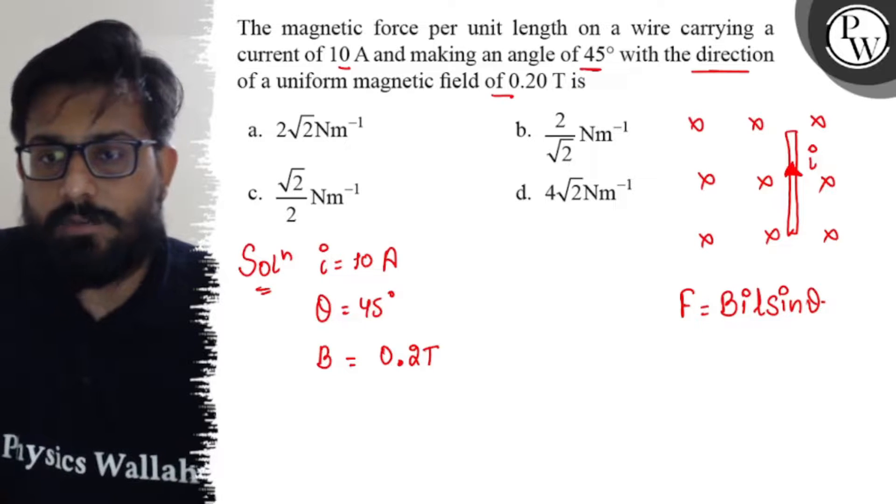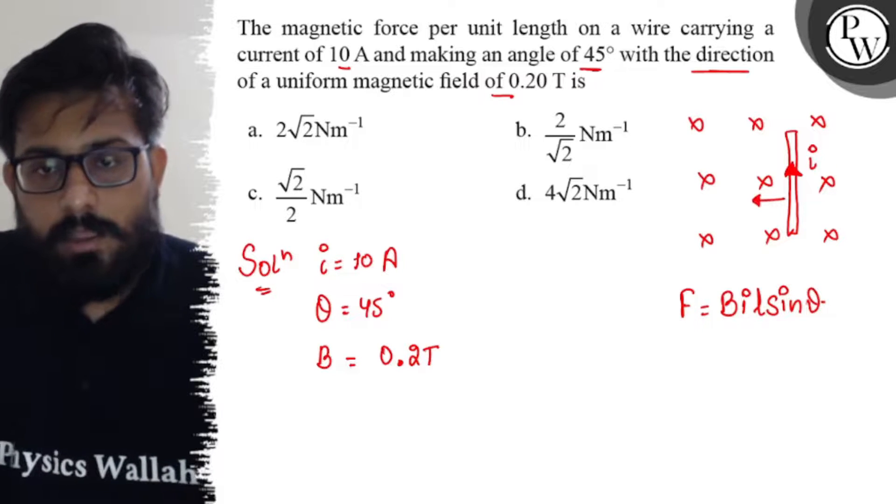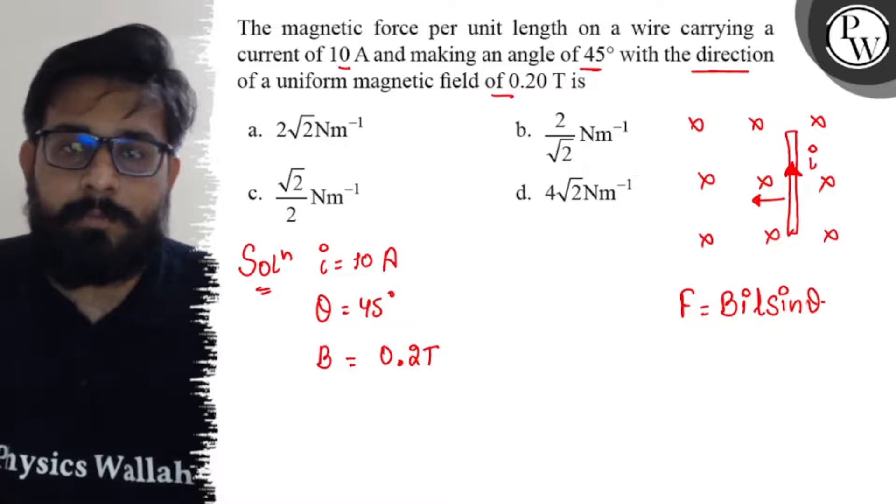So when you have a magnetic force, then that magnetic force will be F = BIL sine theta. Right?